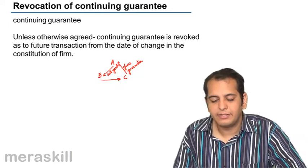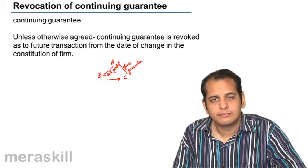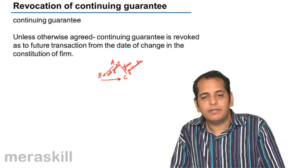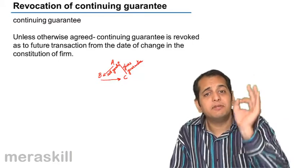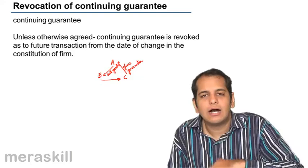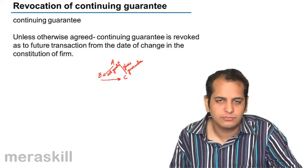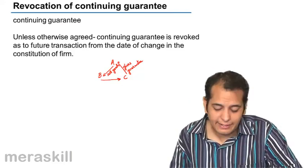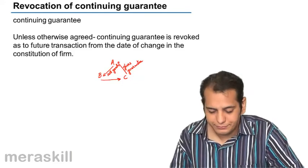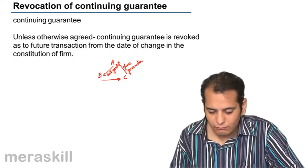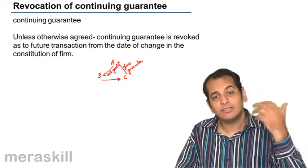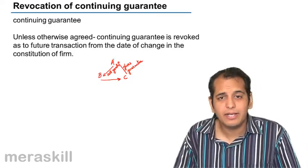C gives guarantee to A. Now what do you mean by giving guarantee? C gives guarantee to A that on due date B will pay you, and if he doesn't pay, I will pay the amount. So this is the guarantee that is given by C.